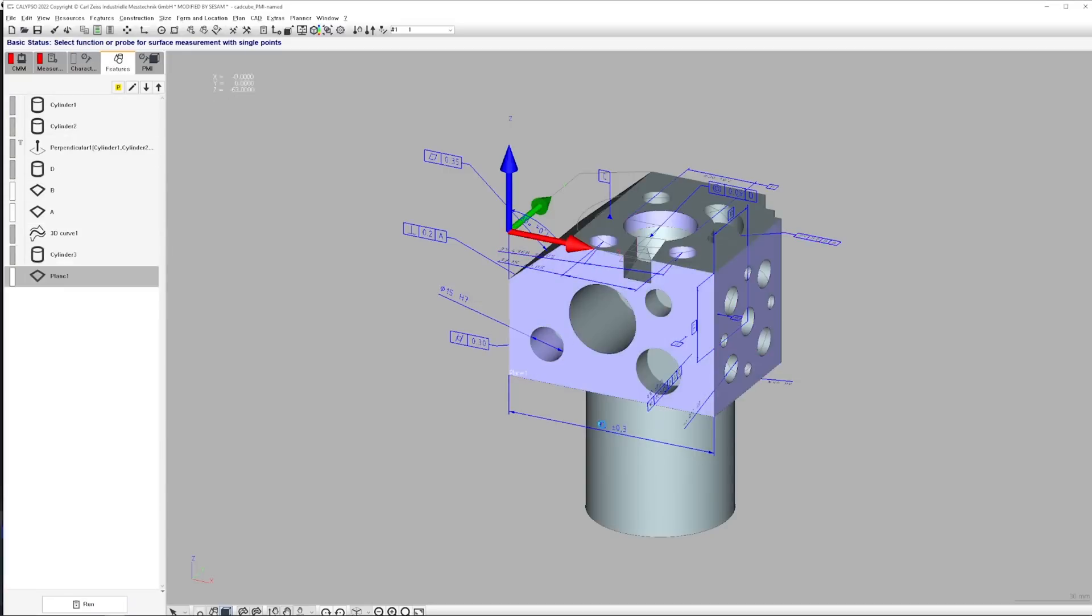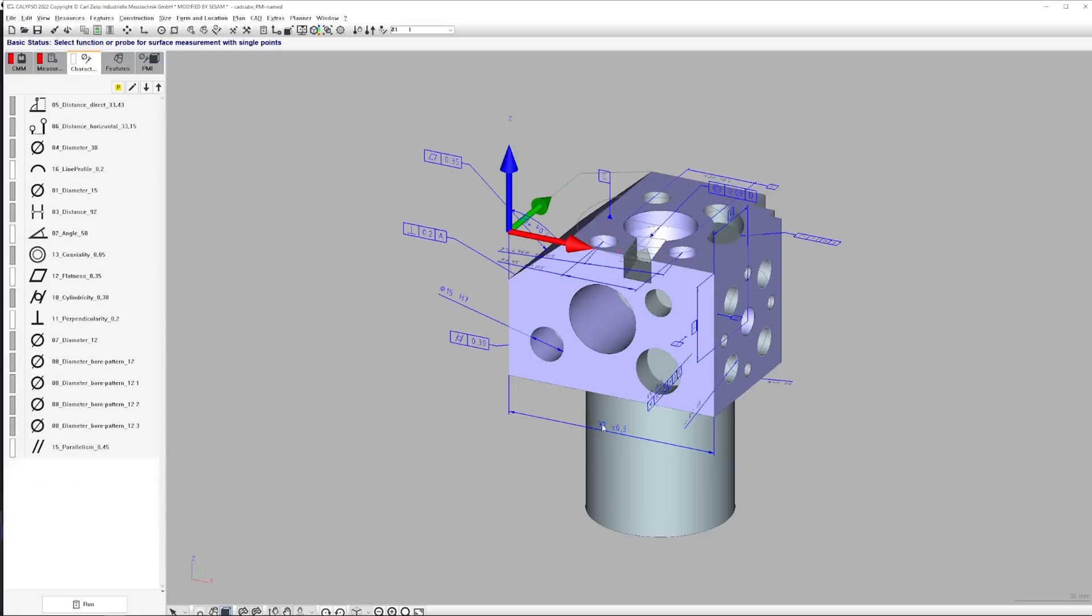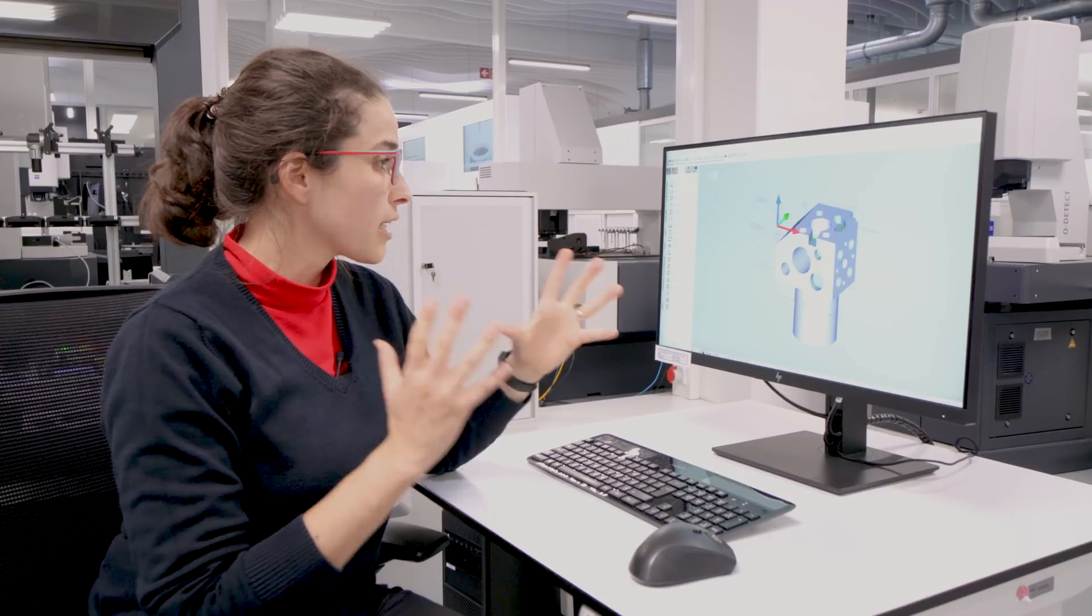Calypso now will create one list of the features and one list for the characteristics. The calculation strategies are already included in the PMI information. So, Calypso is now ready.